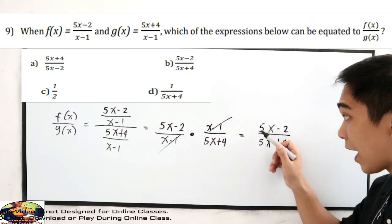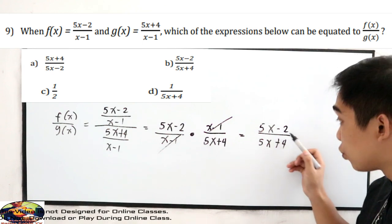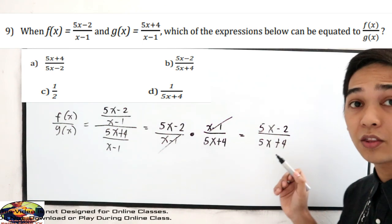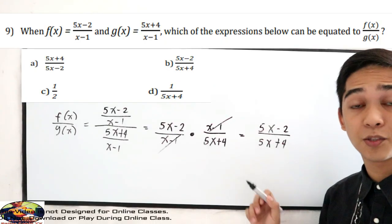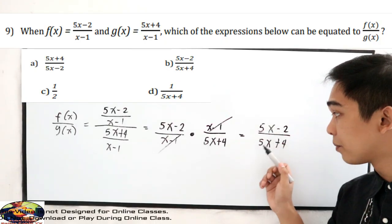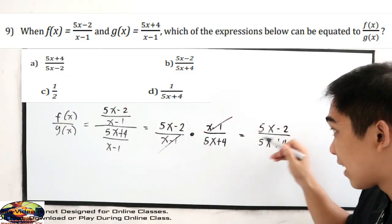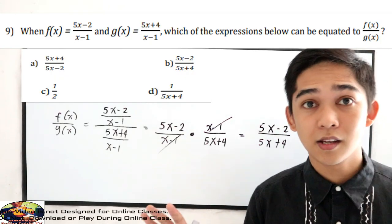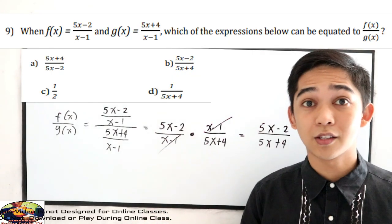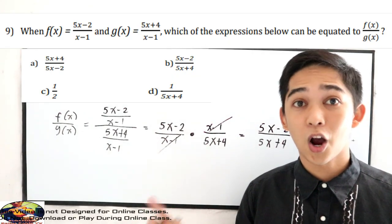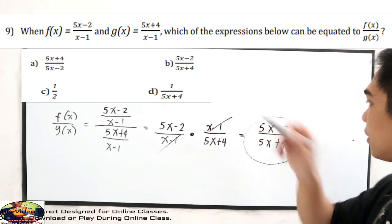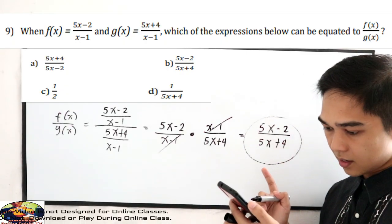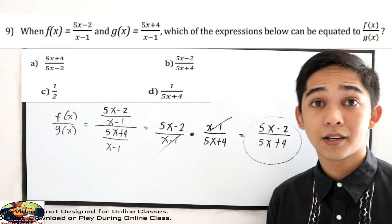We cannot cancel 5 and 5, or 2 and 4. Why? Because our numerator and denominator are single expressions — this is a binomial over a binomial. We cannot cancel individual terms inside a binomial; that is a wrong process. So the answer for number 9 is letter B.